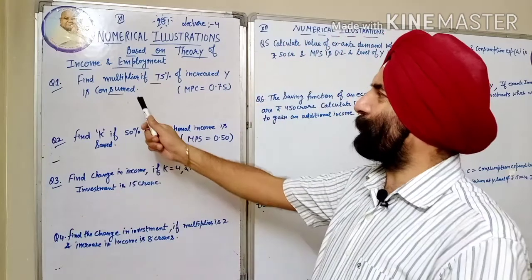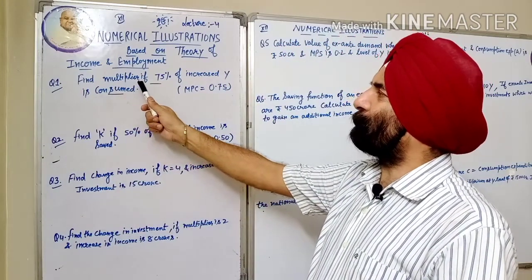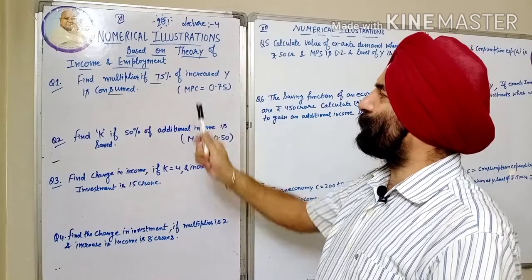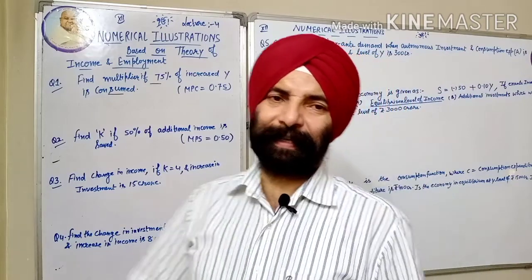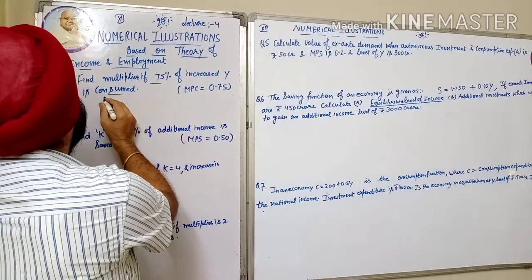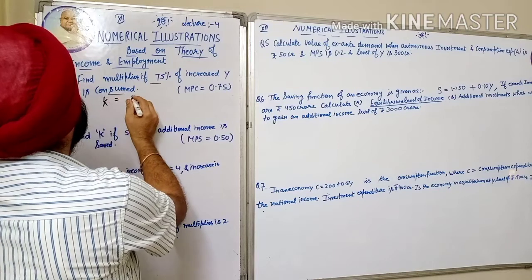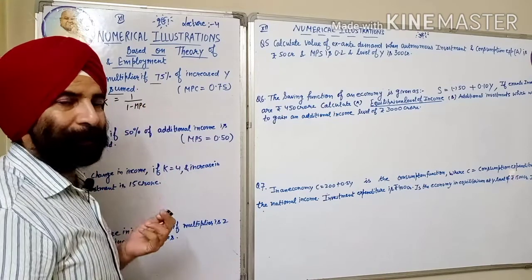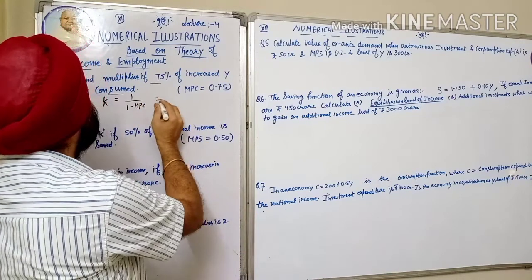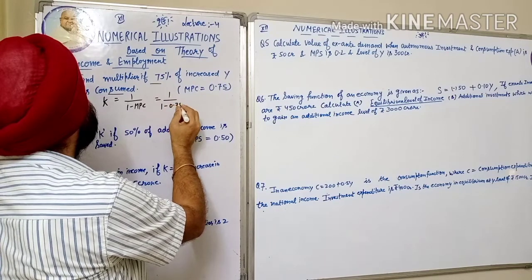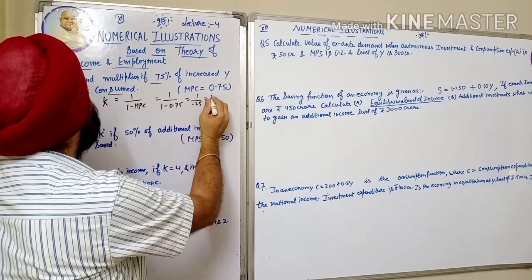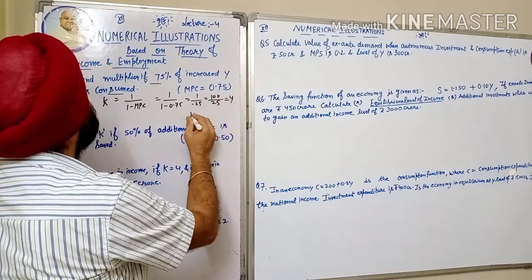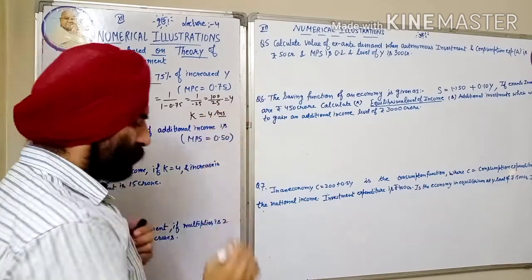We start with Type 1 numerical: Find the multiplier if 75% of increased income is consumed. We know K is equal to 1 upon (1 minus MPC). Here MPC is 0.75, so K = 1 over (1 minus 0.75) = 1 upon 0.25 = 100 upon 25 = 4. So multiplier is equal to 4.